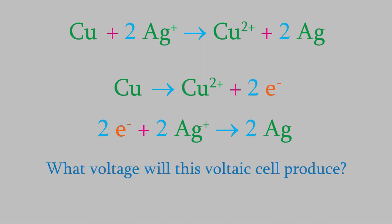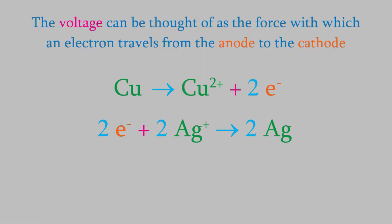One of the main things we might want to know about the overall reaction is, how much electricity can we get out of it? A better way of asking that question is, what voltage can we get out of this voltaic cell? In a voltaic cell, a good way to think about the voltage is that it's the force with which electrons want to get from the anode to the cathode. The greater that force, the higher the voltage is. So, how do we figure out the voltage?